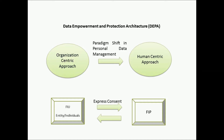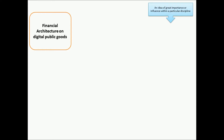DEPA — Data Empowerment and Protection Architecture — is trying to move from an organization-centric to a human-centric approach: how data can be used for the benefit of the individual. This is a paradigm shift in personal data management. Under DEPA there are various bodies: FIU — Financial Information Users, and FIP — Financial Information Providers. The providers may be banks or mutual fund companies, and data flows from provider to user based on express consent.